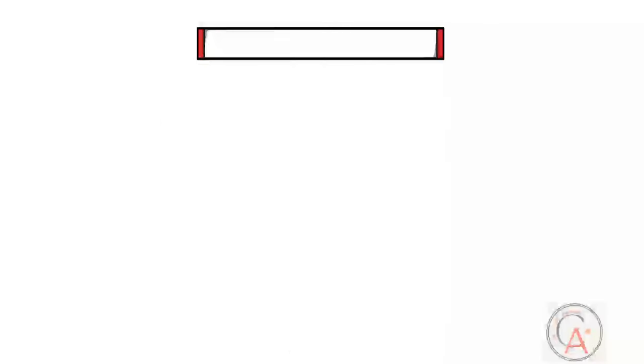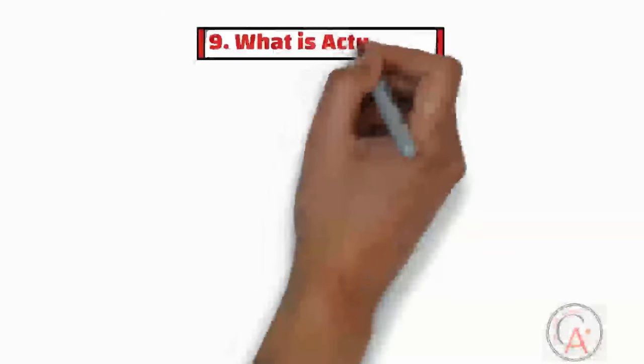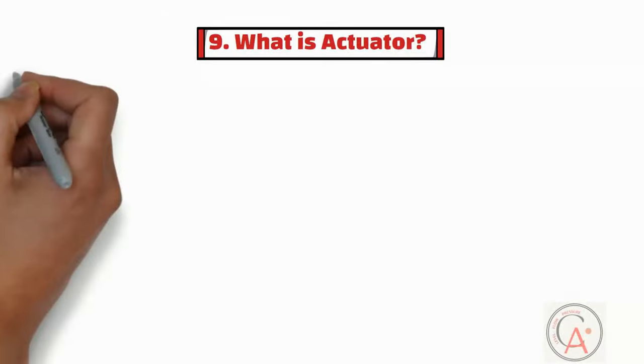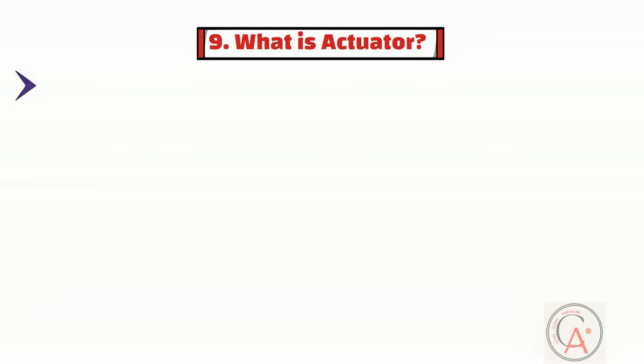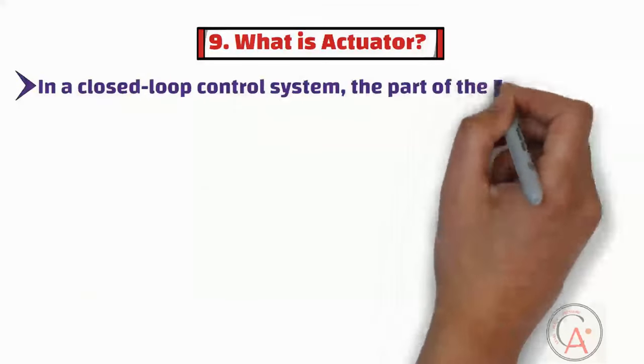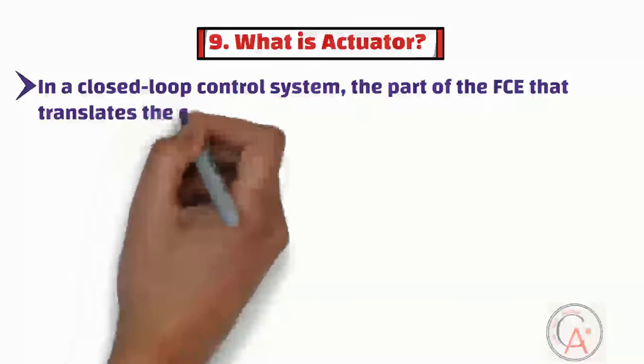The ninth question is: what is an actuator? In a closed-loop control system, an actuator is the part of the final control element that translates the control signal into action by the control device.